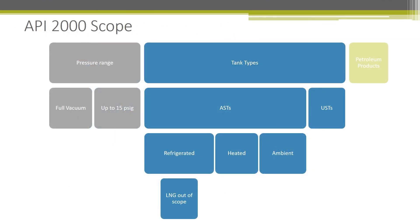The scope of API 2000 includes several things. For pressure ranges, it can account for the full vacuum range of a tank, and for overpressure it can go up to 15 psi. For tank types it includes both above-ground and underground storage tanks, though our presentation will mainly focus on above-ground storage tanks. API 2000 includes refrigerated, heated, and ambient tanks, and only petroleum products are considered within this scope. LNG is outside the scope — for that you will need to look at other sources.